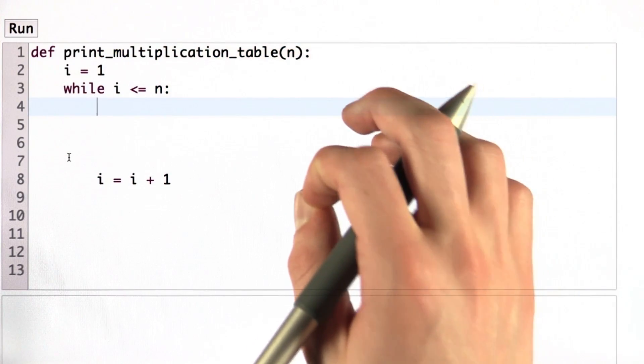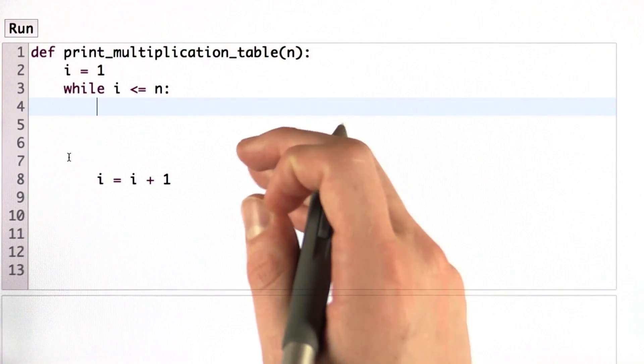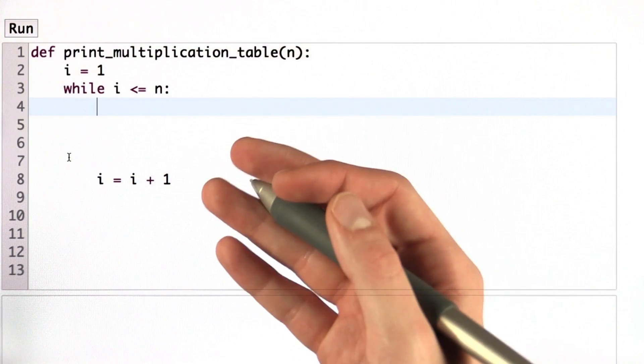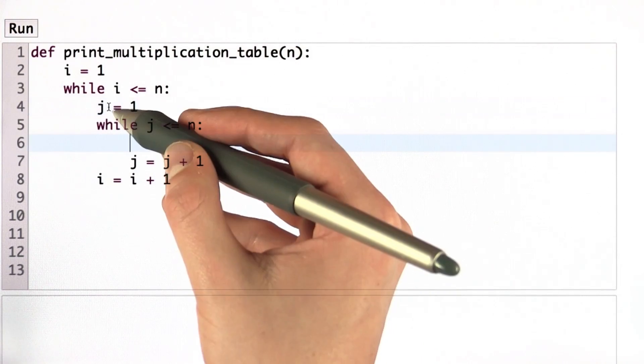Now let's think about the second operand. For every value of the first operand, it goes from 1 to n. Let's write a second while loop inside this while loop to do just that. We call our second operand j.